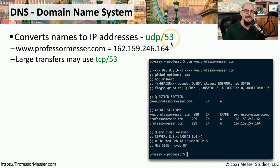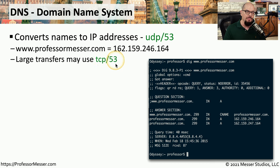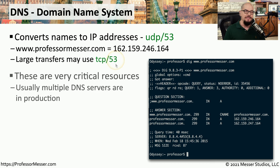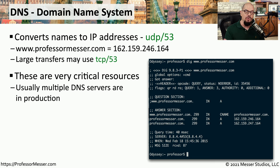If DNS communications involve very large transfers of data, you may find that DNS uses the TCP protocol instead, but still using port 53. These DNS servers are obviously critical resources because we commonly use the names of devices instead of their IP addresses, which is why your network probably has multiple DNS servers all working simultaneously.